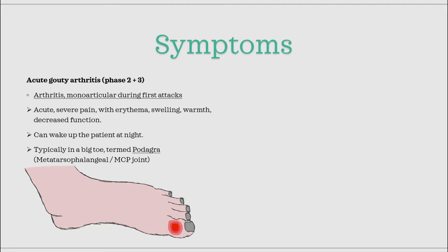The first symptom of gout is a hyperacute onset arthritis that affects one joint. Classically, this is seen in one of the big toes, and this is called podagra. The joint will be swollen, red, warm, very painful, and it will have decreased range of motion.